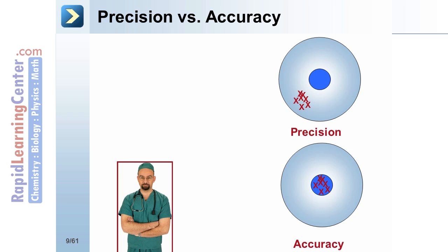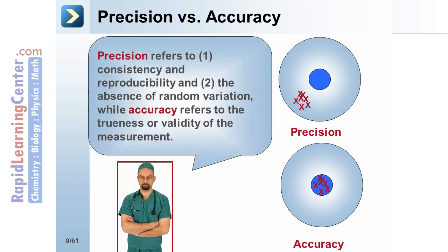The terms precision and accuracy are often confused, so let's take a closer look at the definitions for these two terms in this context. Precision in a test refers to consistency and reproducibility, that is, the reliability of the test, and to the absence of random variation.